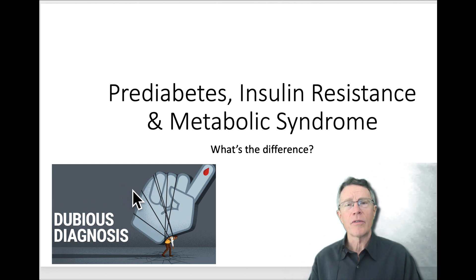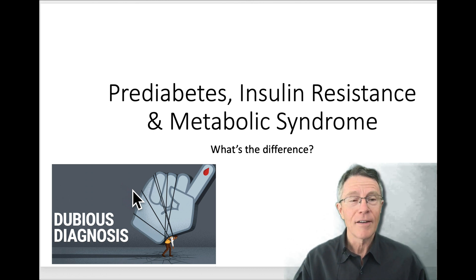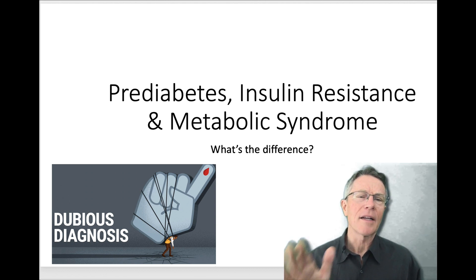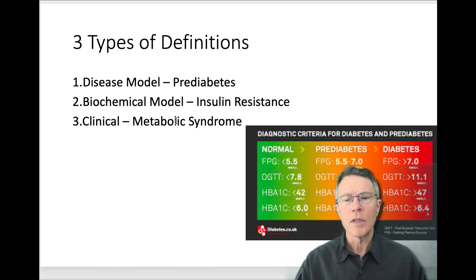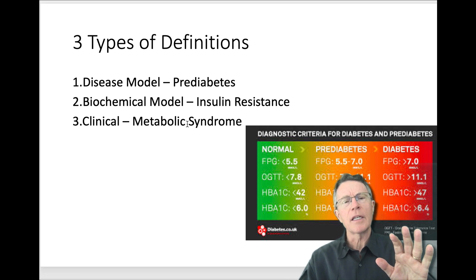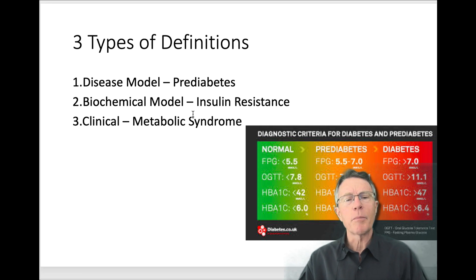Pre-diabetes — all these are the same thing and they cause heart attack and stroke and eye damage, etc. They're all defining the same thing but looking from different perspectives. If you're looking from a disease model, it's pre-diabetes. If you're looking from a biochemical model, it's insulin resistance. If you're looking from the clinical model — a doctor looking at a single patient trying to diagnose what's going on, especially 5-10 years ago before we understood it that well — it was metabolic syndrome.